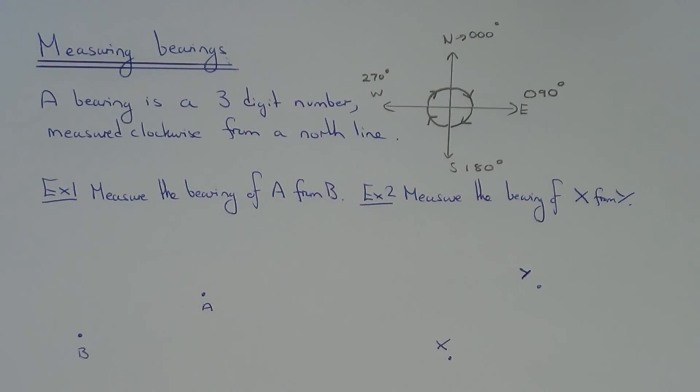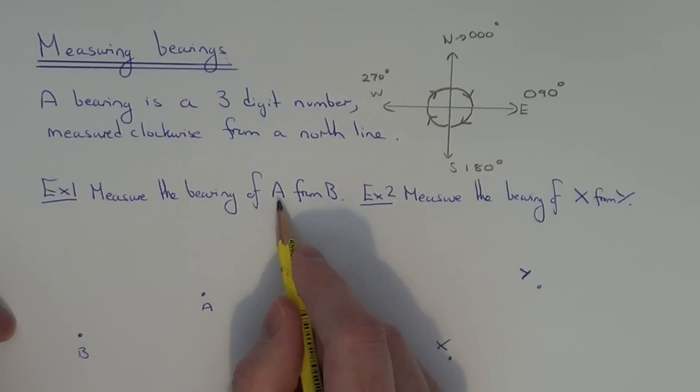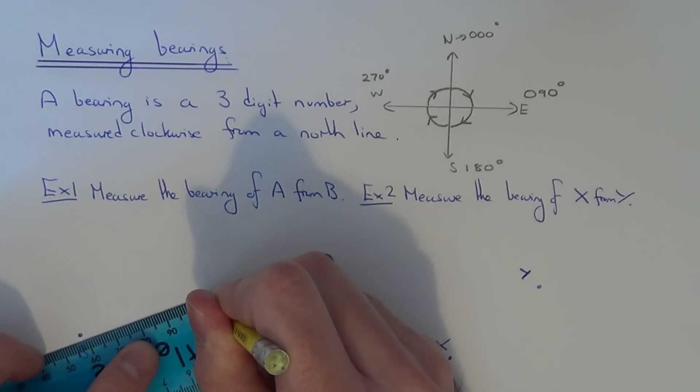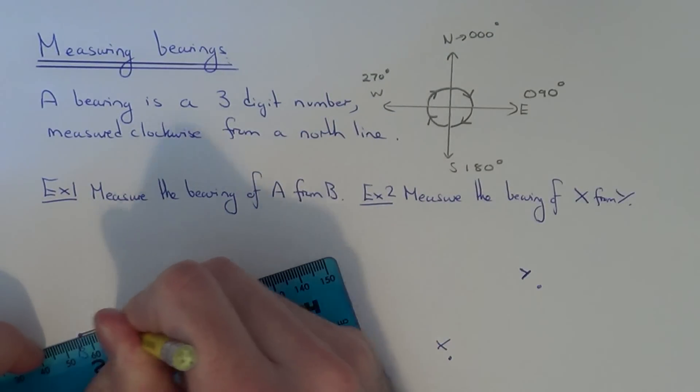So let's take a look at a couple of examples of measuring bearings. In example one we need to measure the bearing of A from B. First of all then connect the two points which you have.